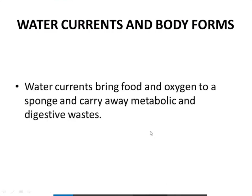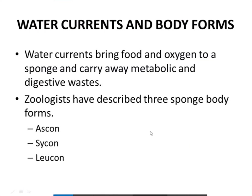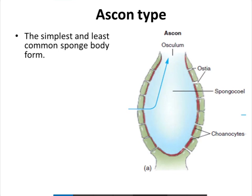Water currents bring food and oxygen to a sponge and carry away metabolic and digestive wastes. Zoologists have described three sponge body forms: the Ascon type, the Sycon type, and the Leucon type. We'll discuss them one by one. The Ascon type is the simplest and least common sponge body form.